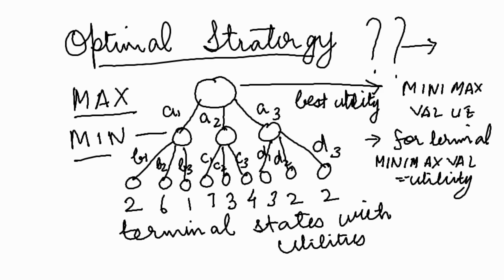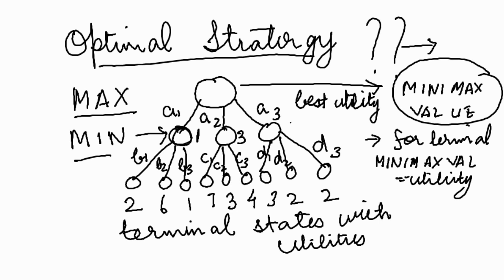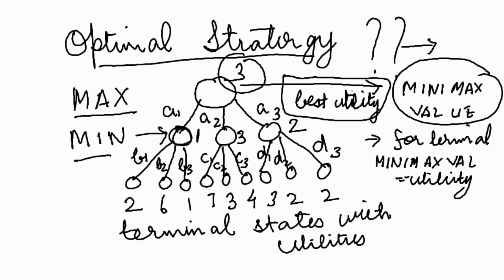For a node of Min, the Minimax value is the minimum value of all its successors. For example, the successors b1, b2, b3 have values 2, 6, 1, so the Minimax value of that node is 1. Similarly, for the other Min nodes the Minimax values are 3 (minimum of 7, 3, 4) and 2 (minimum of 3, 2, 2). For a node belonging to Max, the Minimax value is the highest value of all its successors, so out of 1, 3, 2, the highest value is 3, which becomes the Minimax value of the root node.